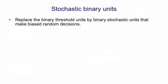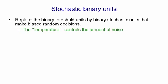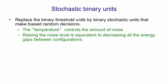The way we get noise into a Hopfield net is to replace the binary threshold units by binary stochastic units that make biased random decisions. The amount of noise is controlled by something called temperature, which you'll see in a minute in the equation. Raising the noise level is equivalent to decreasing all the energy gaps between configurations.